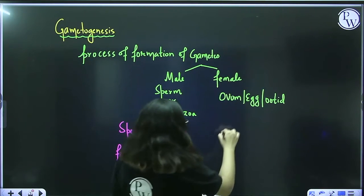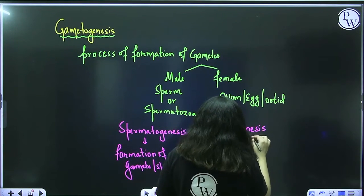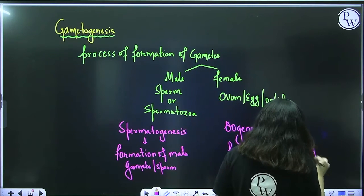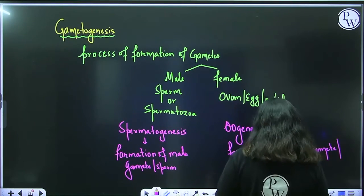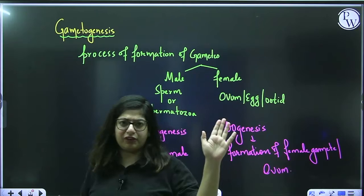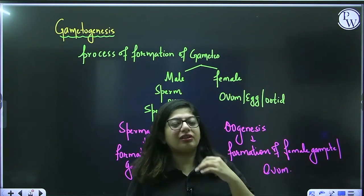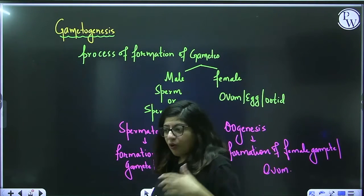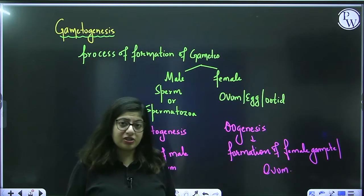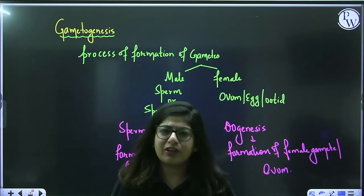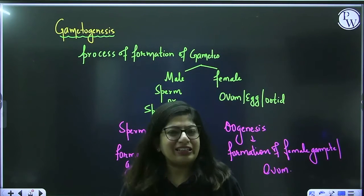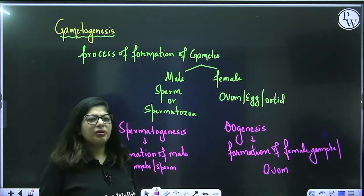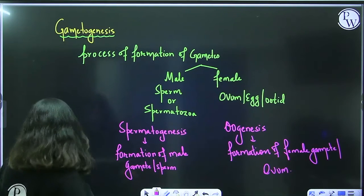Oogenesis is the formation of the female gamete, ovum. As you know, males and females are quite different, especially after they hit puberty. Their body physiology, structures, and functions differ, so the formation of gametes is also a little different. Most of the pattern is the same, but there are small differences between spermatogenesis and oogenesis. Today we will cover only the formation of the male gamete because we have not yet done the female reproductive system.